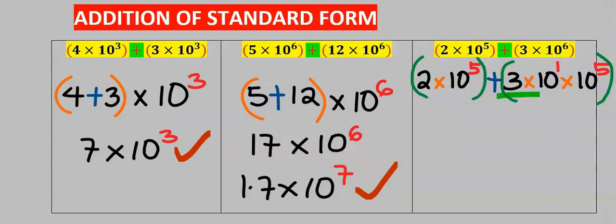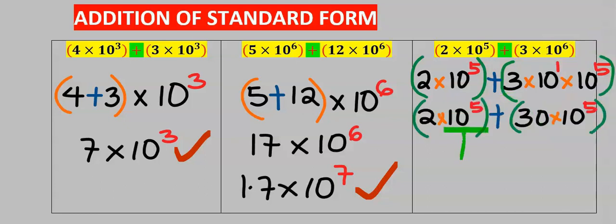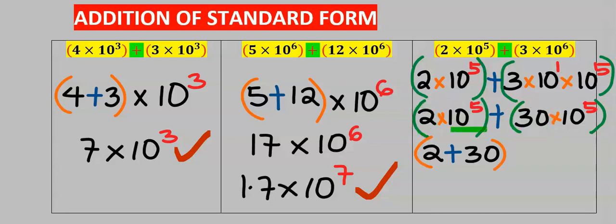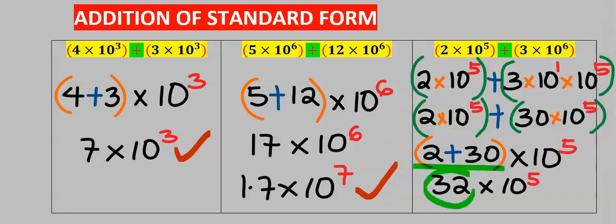Next, 3 times 10 gives you 30, with 10 to the power of 5. Now we can add both standard form values. We add 2 and 30. Since these powers are the same, I will multiply this with 10 to the power of 5. 2 plus 30 is 32.